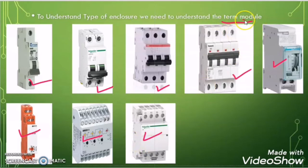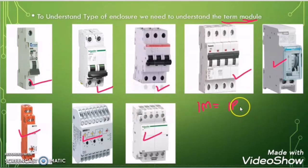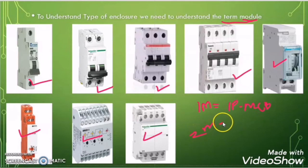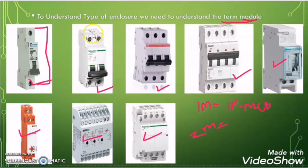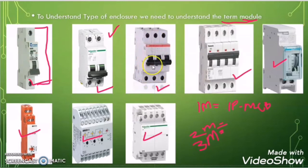Here we have to understand what the module represents. One module represents that there is a space to install a single pole MCB. Two modules represent that there is a space to install two single pole MCBs, or a double pole MCB, or one three pole MCB. In the same way, four modules represent there is a space to install four single pole MCBs or one three pole MCB.